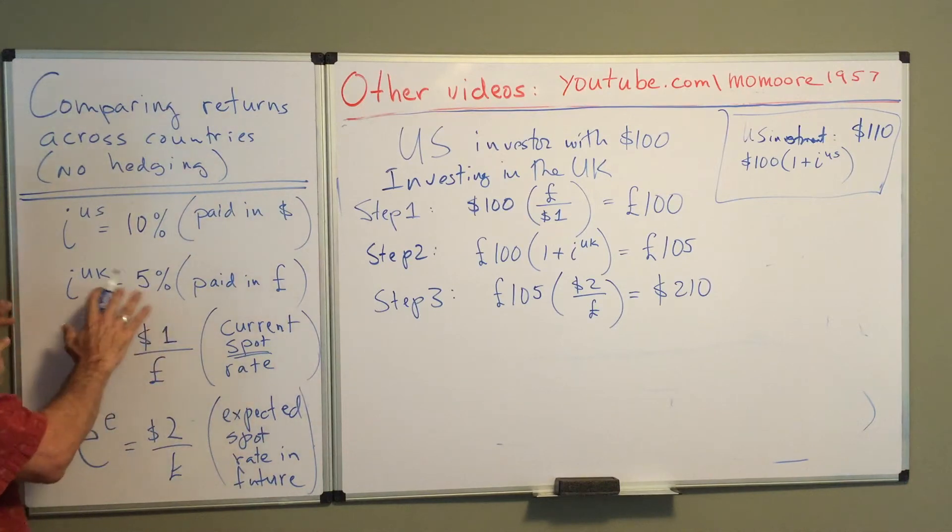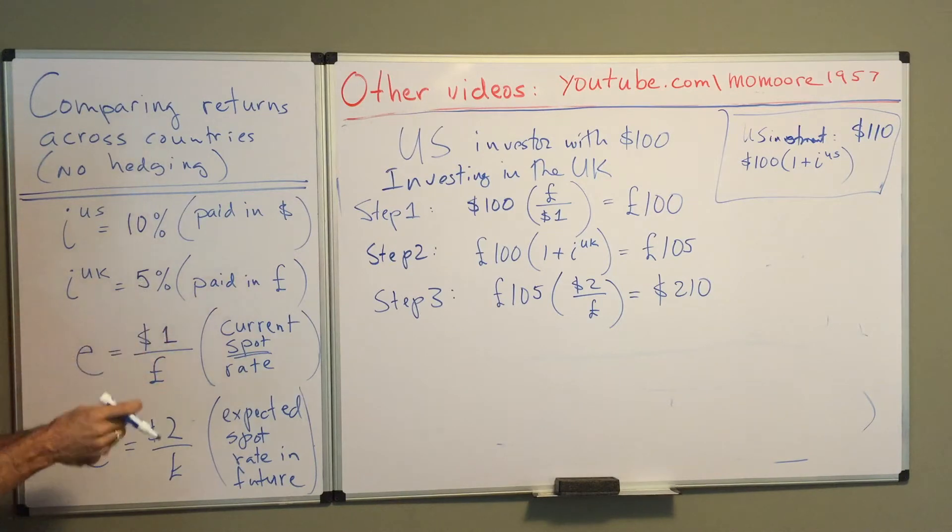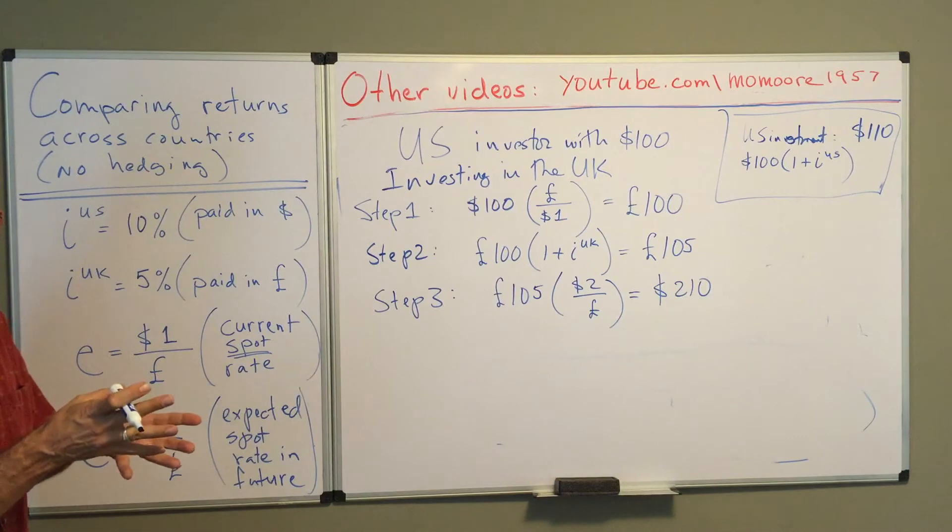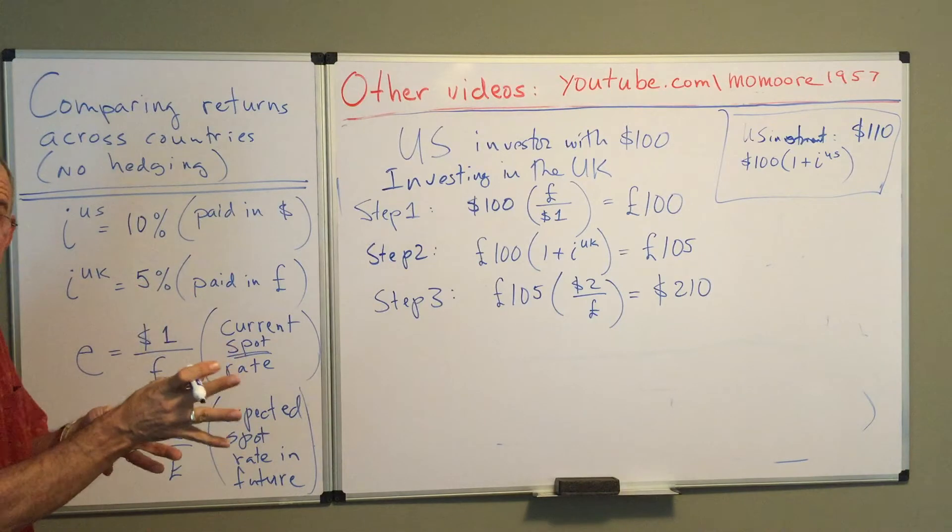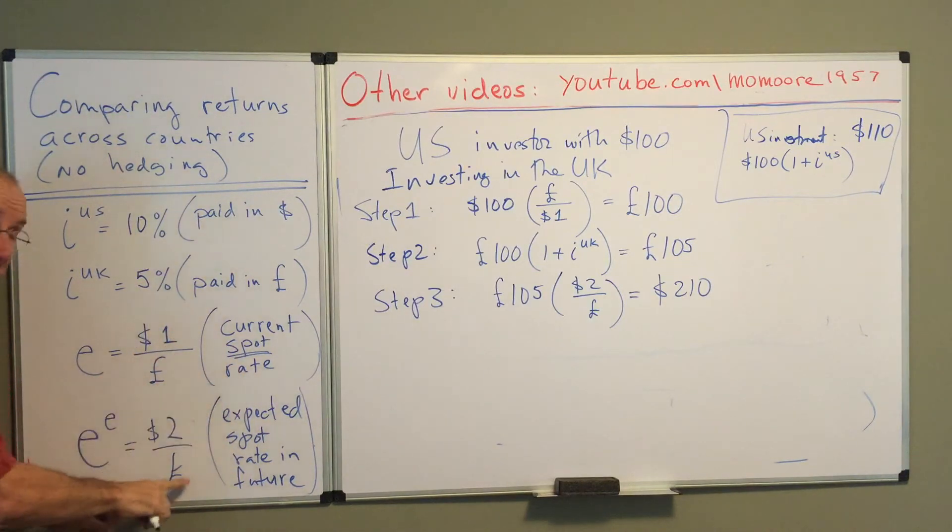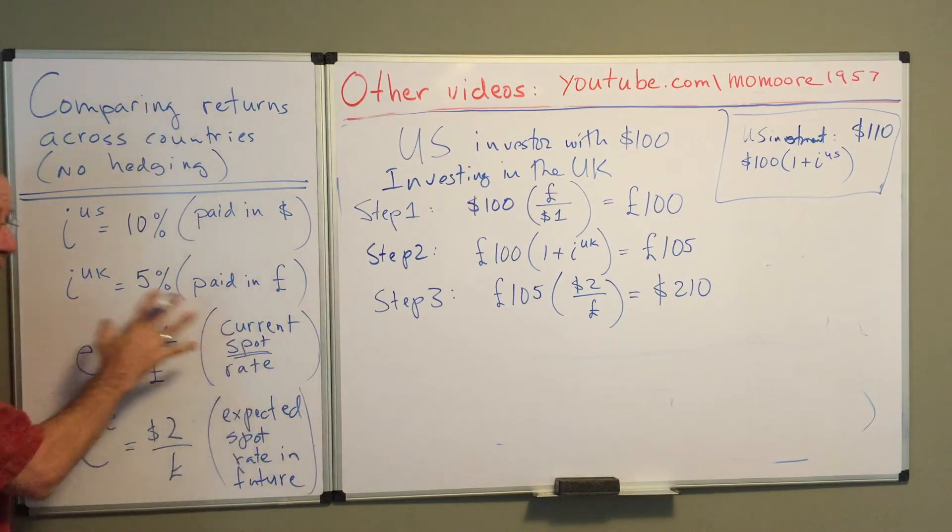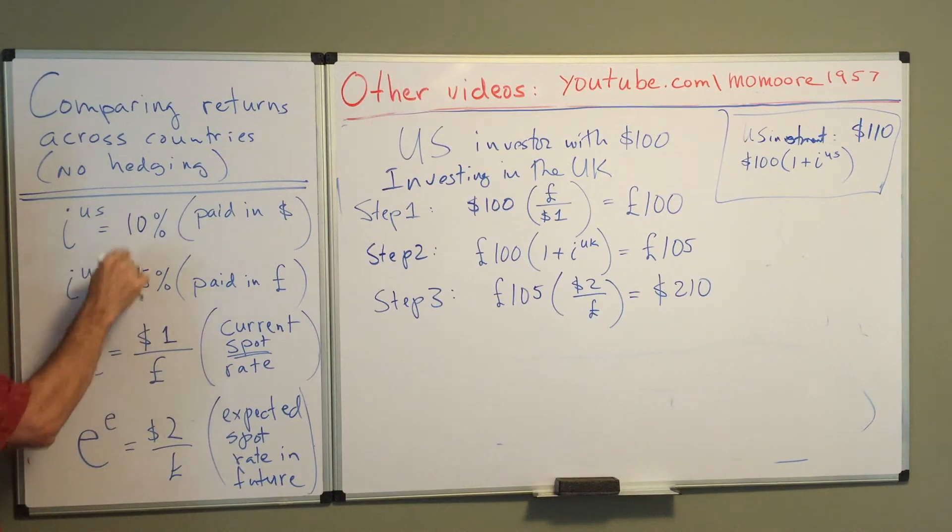So even though the interest rate is lower in the UK, and there may be relatively small numbers of pounds that the American investor gets, each pound is going to be worth a lot more dollars because of the expected fall in the value of the dollar. So the expected depreciation of the dollar, the expected appreciation of the pound will overwhelm this interest rate differential.